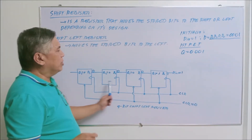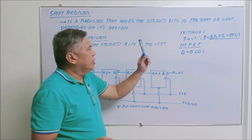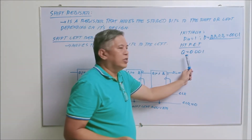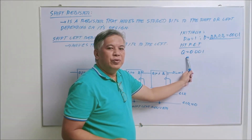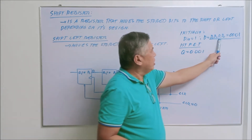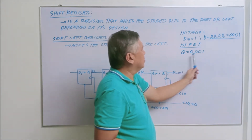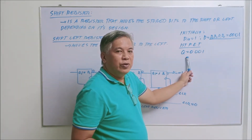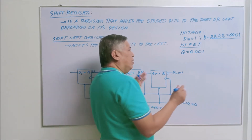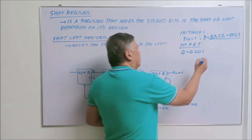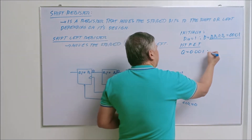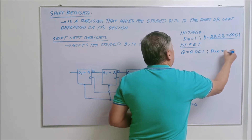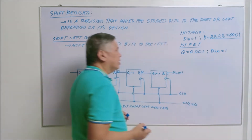Zero zero zero one — which is actually the value of your D, because as we have been discussing, on a positive edge trigger of the clock, D implies Q. Whatever is the value of your D becomes the value of your Q. Before the second positive edge trigger of the clock, let's say your D input will remain as one.